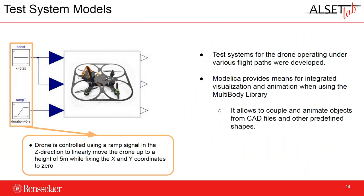Now that we have all our drone components explained, everything is compiled in this top-level model. We have a package for all of our test systems. On the left side we have three inputs: X position on top, Y position in the middle, and Z position on the bottom. We are able to integrate visualization and animation using the multibody library when we simulate this. For most of these studies, we apply a ramp signal only in the Z direction to linearly move the drone up to a height of five meters while fixing X and Y coordinates to zero.